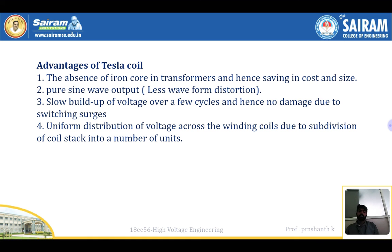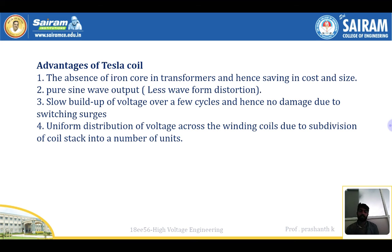There is no sudden sparking or transient current rush in the Tesla coil because the voltage builds up slowly rather than varying suddenly. Additionally, there is uniform distribution of voltage across the winding coils due to subdivision of the coil stack into a number of units — the voltage spreads continuously and uniformly across all subdivided coil units.